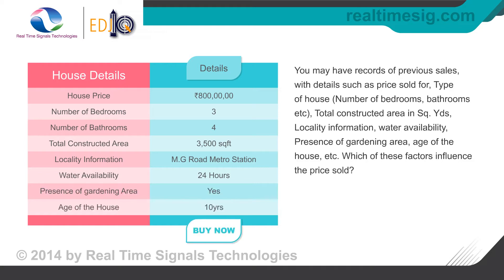Locality information, water availability, presence of gardening area, age of the house, etc. Which of these factors influence the price sold? Can we use this information to fix the price for a new house that has come up for sale?